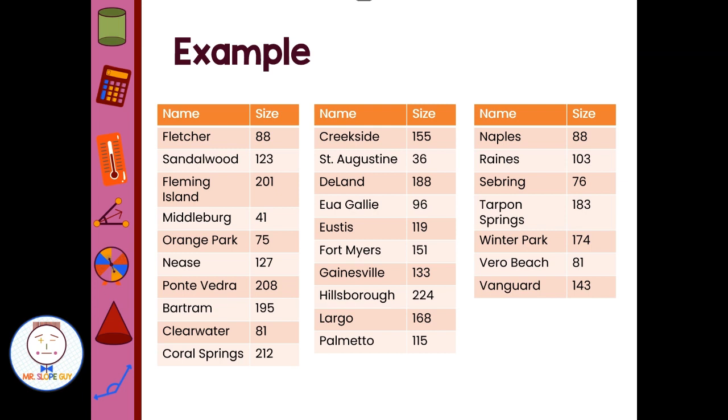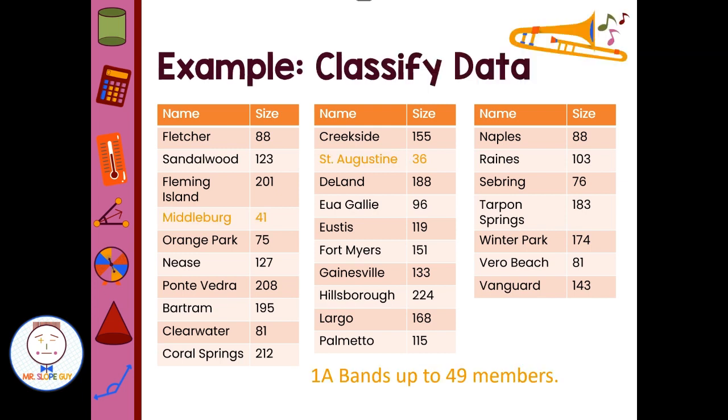So now we need to go through and figure out how many are in each bin or each category. So let's start with the 1A band. 1A bands are up to 49 members. Well, we have Middleburg has 41, we have St. Augustine has 36, and I believe that is it for 1A bands. We have two bands that are in our 1A category.